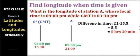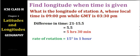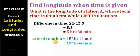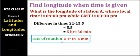Next, keep this formula in mind: the rate of rotation of the earth is 15 degrees in 60 minutes, which simplifies to 1 degree in 4 minutes. In other words, the earth rotates 1 degree every 4 minutes.